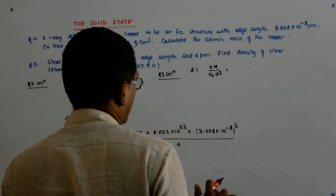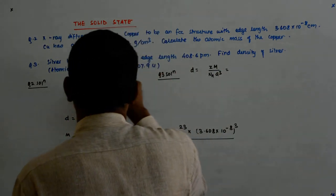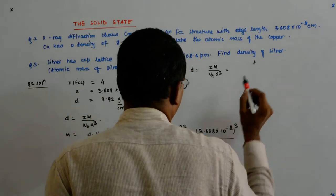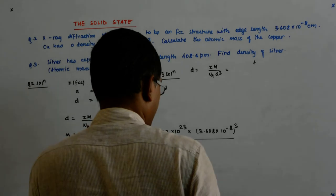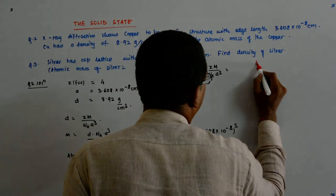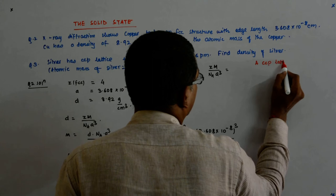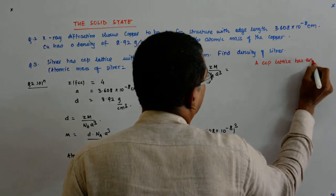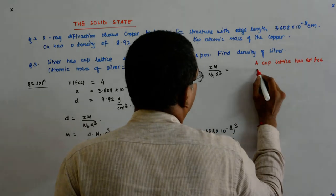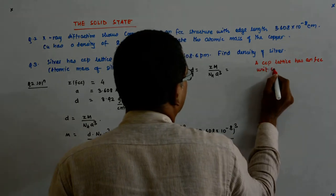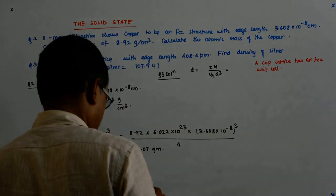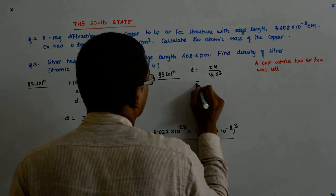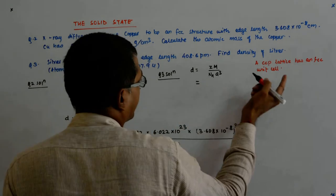Fine. Z is, this is a CCP lattice. CCP lattice has its unit cell as FCC. CCP lattice has an FCC unit cell. Correct? So, what is Z? Z is, FCC has 4.